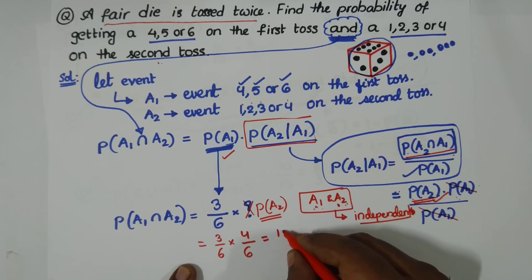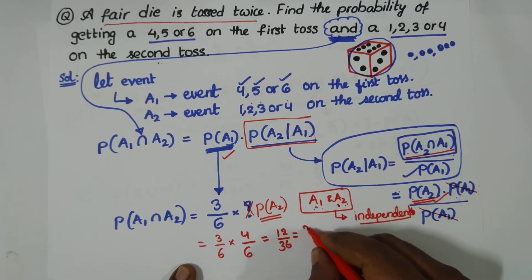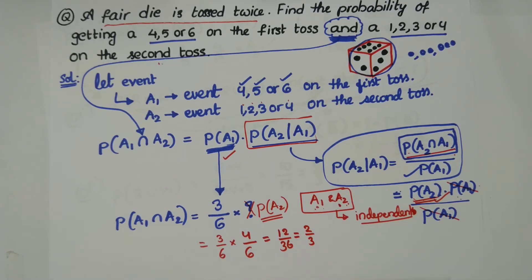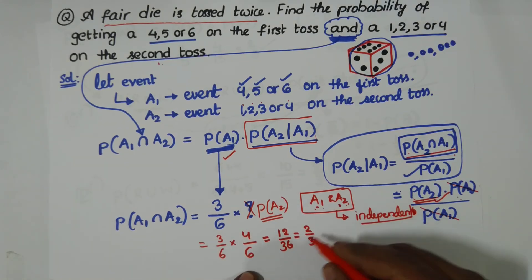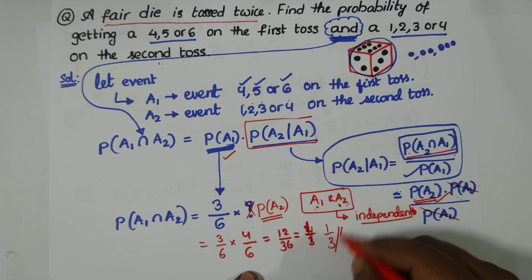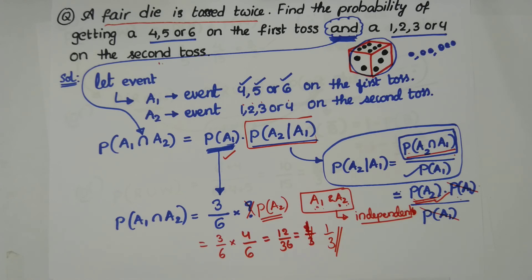So P(A1 ∩ A2) = 3/6 × 4/6 = 12/36 = 1/3. The final answer for this question is 1/3, so P(A1 and A2) = 1/3.